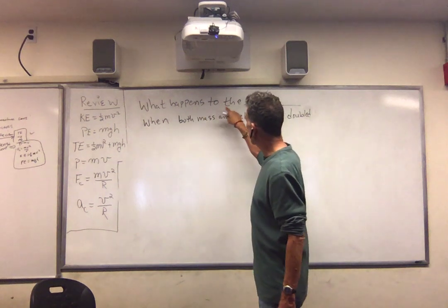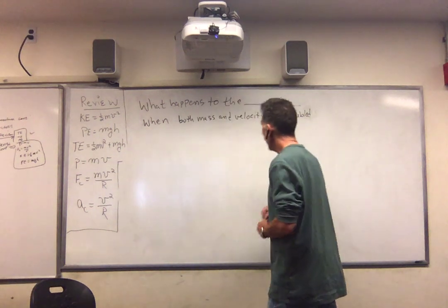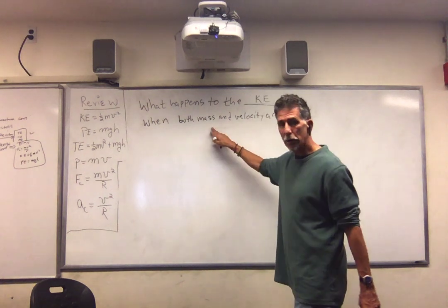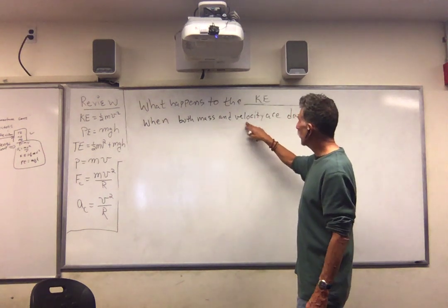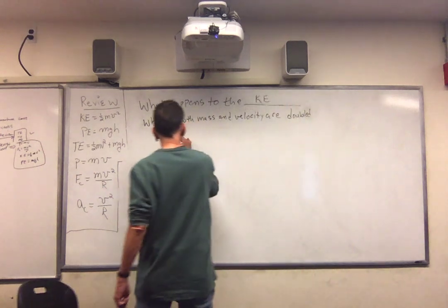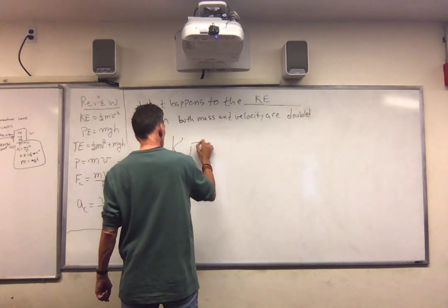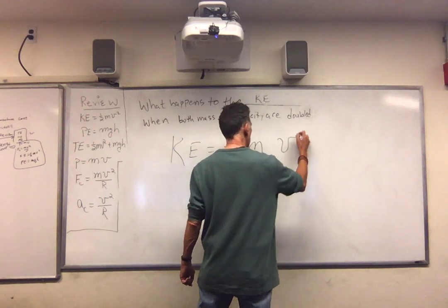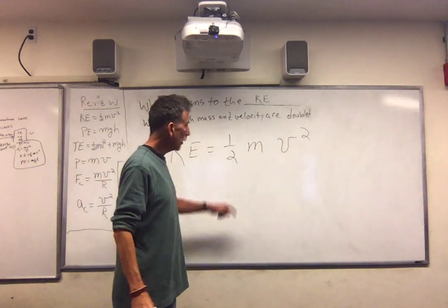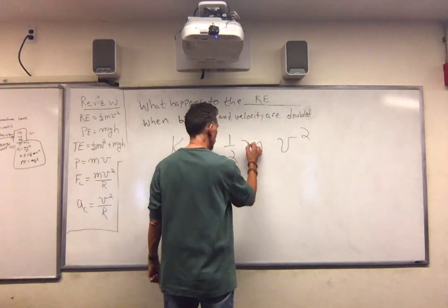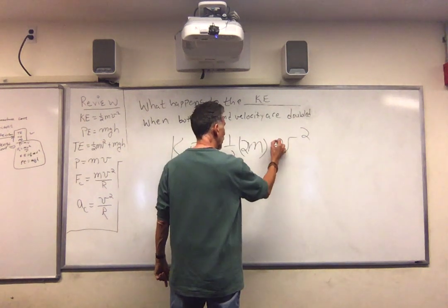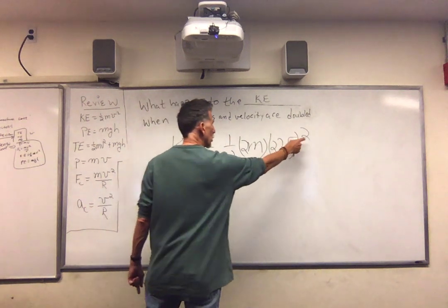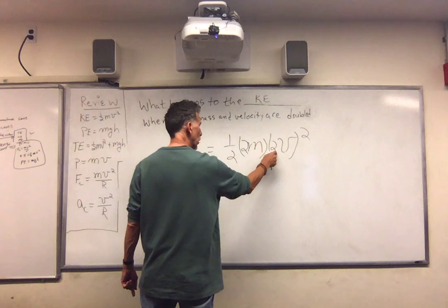So the first thing I say is what happens to the kinetic energy? What happens to the kinetic energy when both the mass and velocity are double? So let's look at the expression for kinetic energy. One half mv squared. We're doubling the mass and we're doubling the speed or velocity.